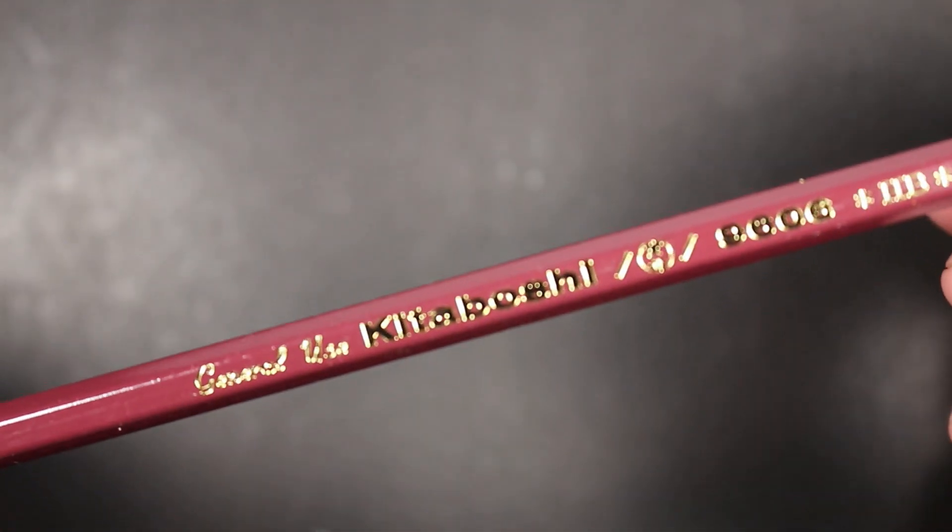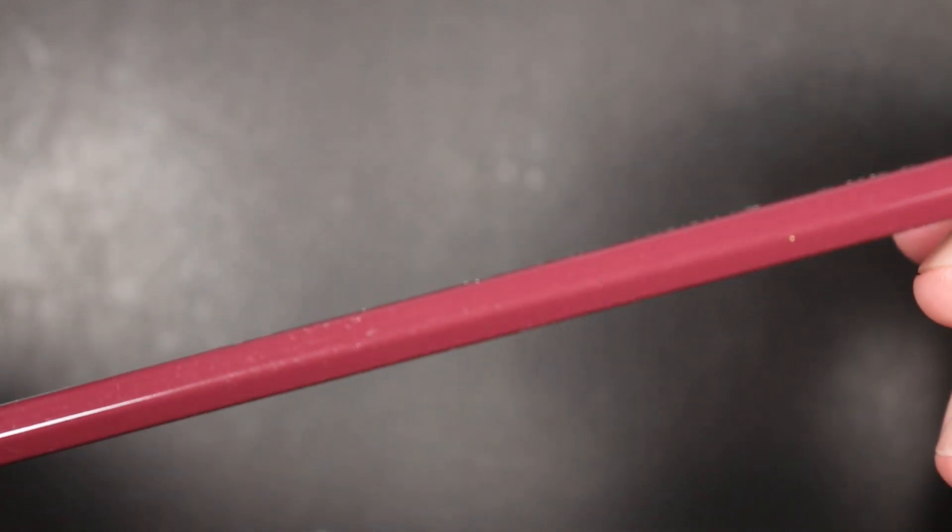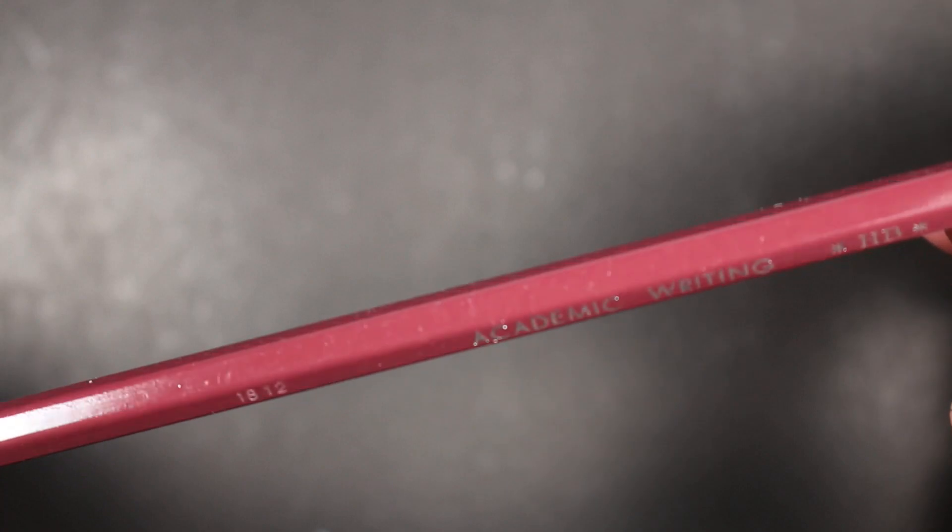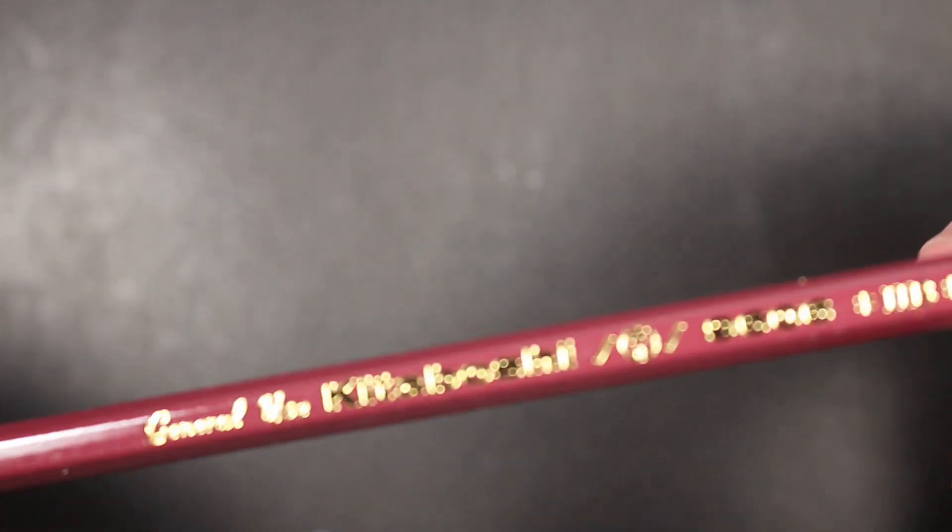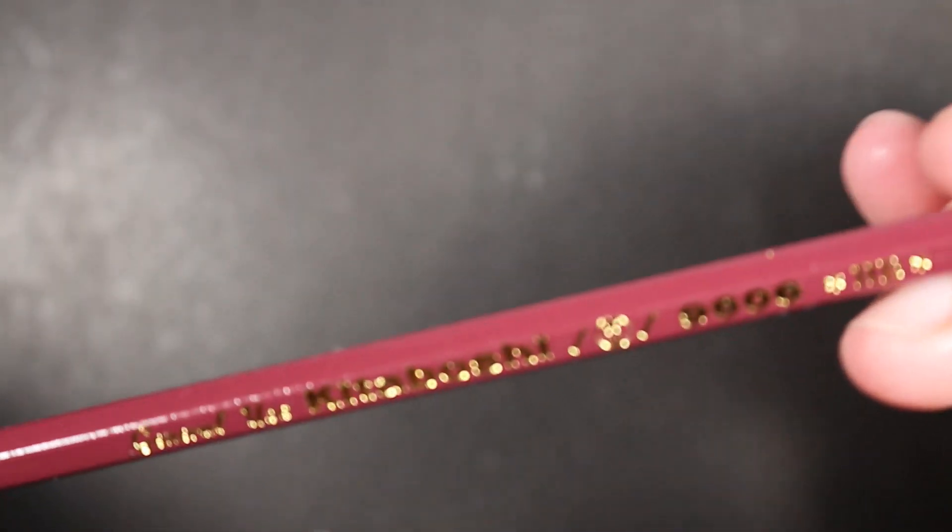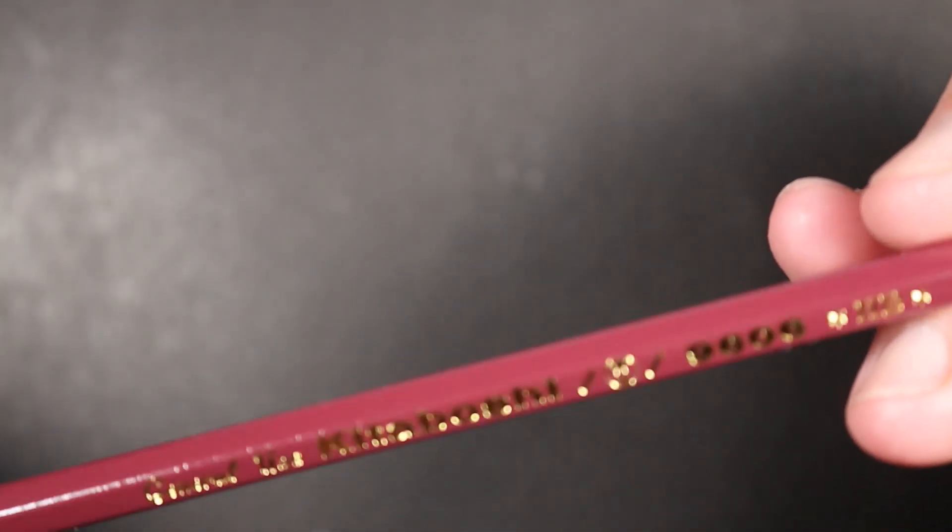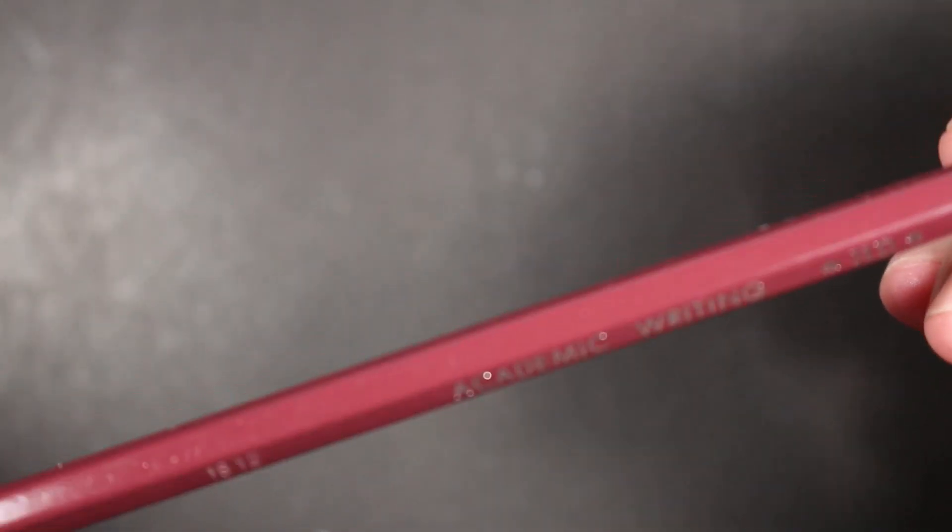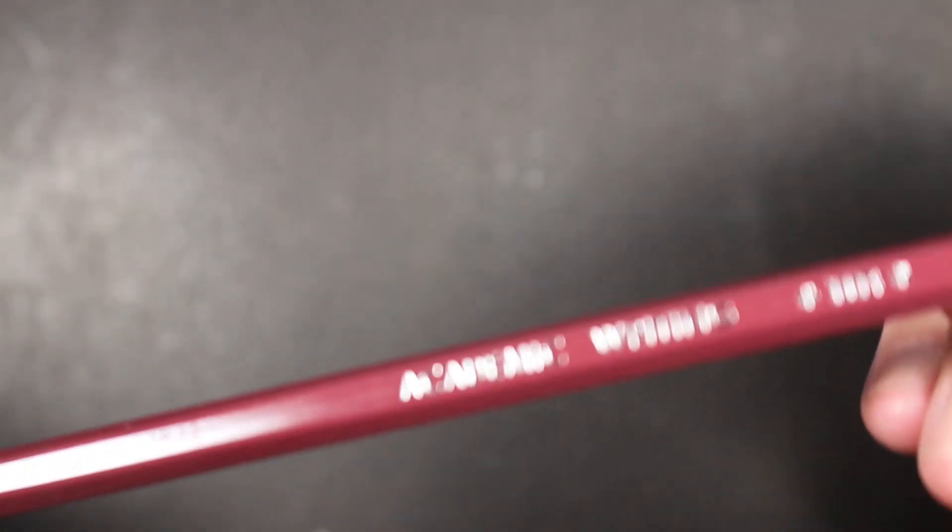The imprint is in gold foil and it is sort of a wine colored paint job. Like almost all of the Japanese manufacturers, a beautiful beautiful paint job on this pencil, just beautiful. If we turn the pencil, then we see a silver foil imprint.